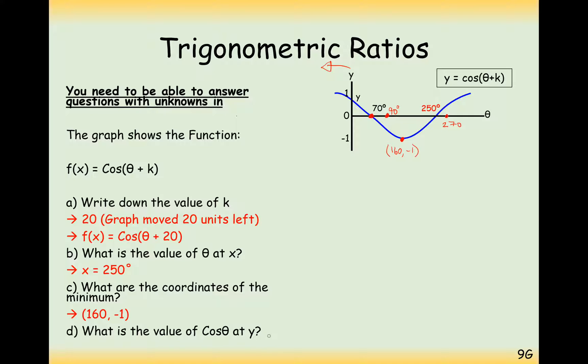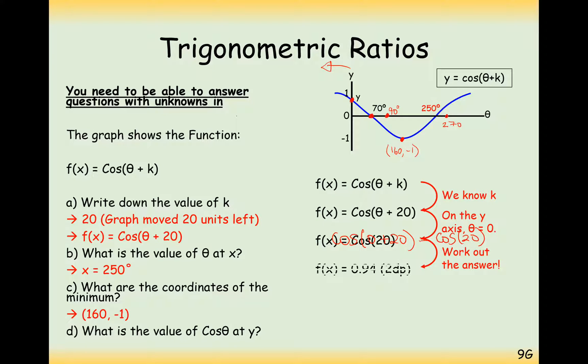What is the value of cos theta at y? Well, in this case here, what we're going to have to work out is substituting theta into our angle here. So this is going to be cos of 0 plus 20. So the answer to the y-coordinate here is just going to be the value of cos 20. So we know that theta is 0, so we get 0.94 there.